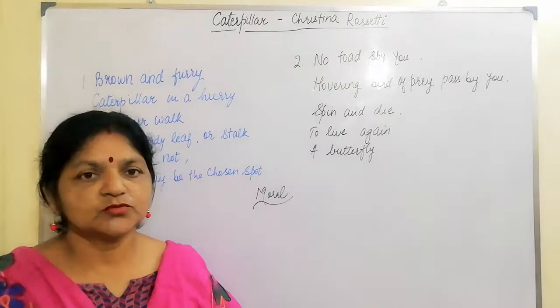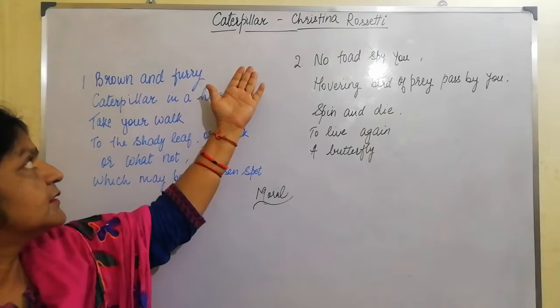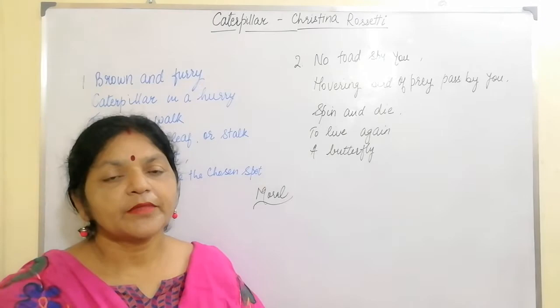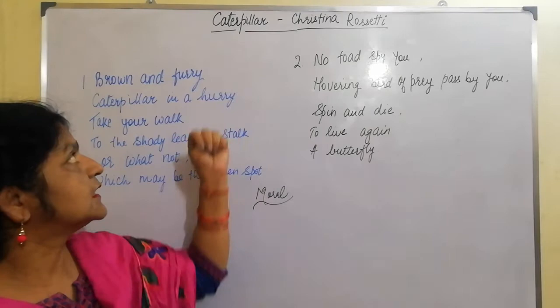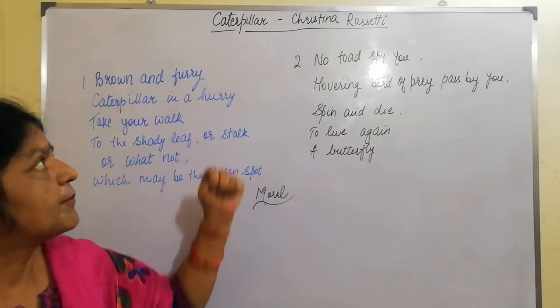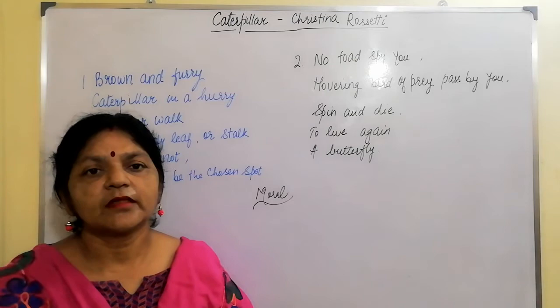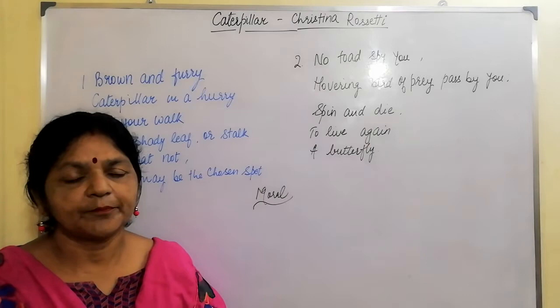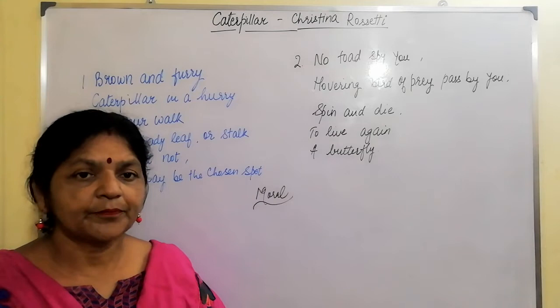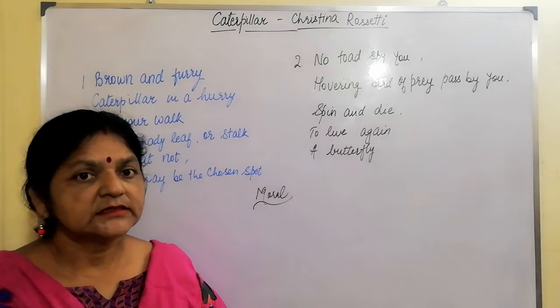Now a brief description about the poem Caterpillar. Caterpillar means the larva of a butterfly or moth. It has a long soft body, many short legs and often brightly colored or spiny skin. The poet describes the beauty of the caterpillar which is brown in color, covered with fur. Caterpillars do not stay in this stage for a very long period of time — all they do is eat. They start eating the leaf onto which they were born so that they can grow quickly.